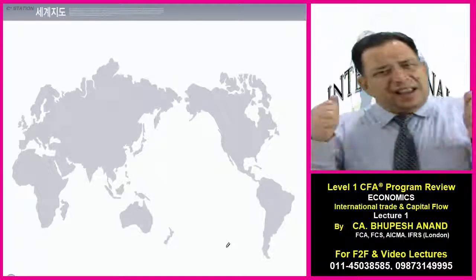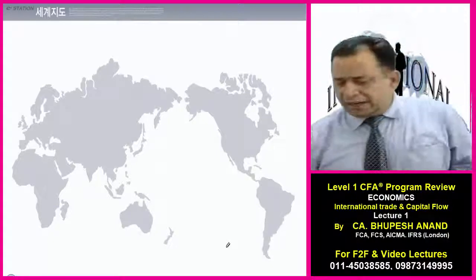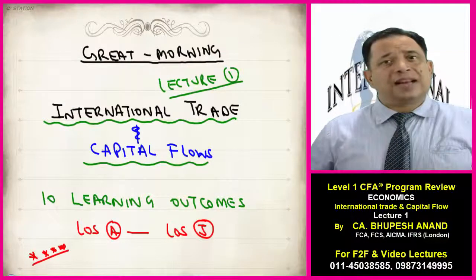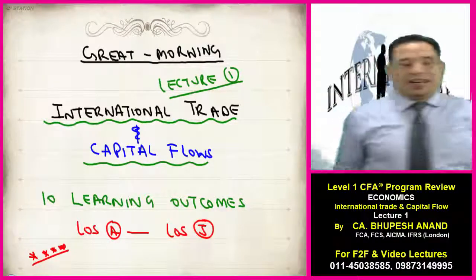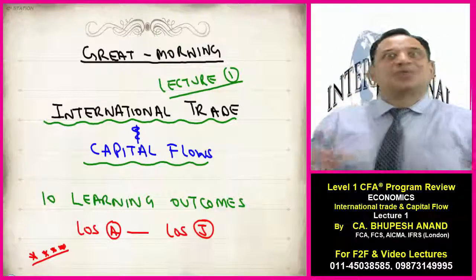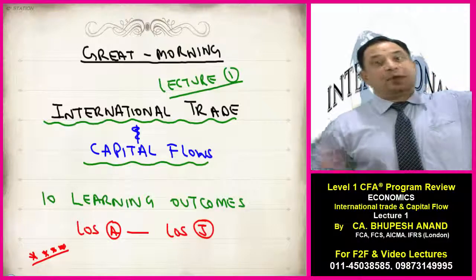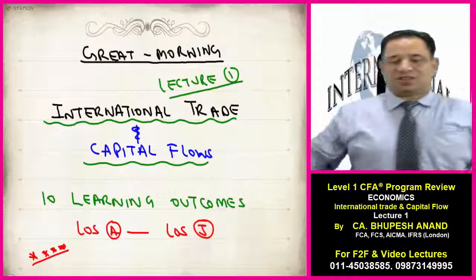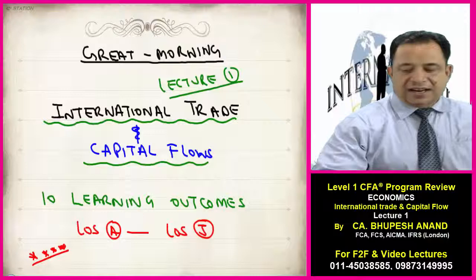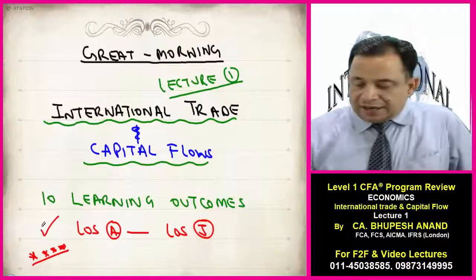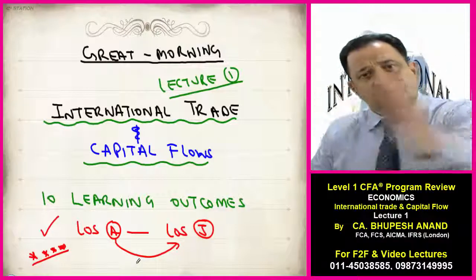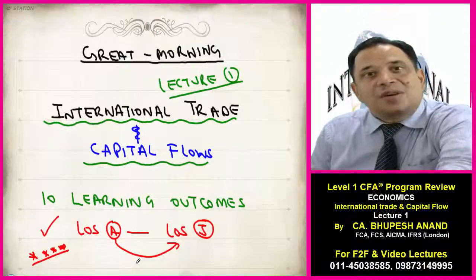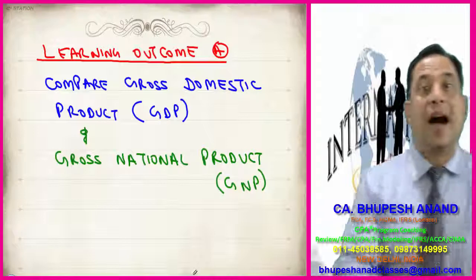This reading will be very interesting, very enthusiastic, very intuitive — you will enjoy it. Please take out your registers. Today is lecture number one and a small lecture. There are ten learning outcomes. Lecture one: International Trade and Capital Flows — how a country trades with another country, what are the norms, what are the restrictions, what are the basic barriers of international trade and capital flows. This reading has 10 learning outcomes and it is very important — that's why I've given it four stars.